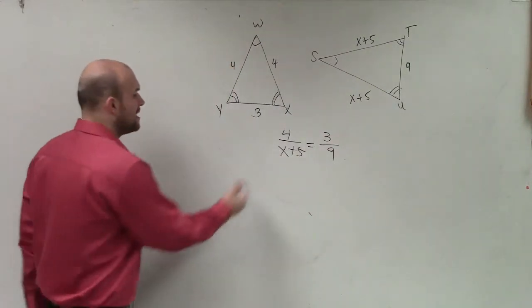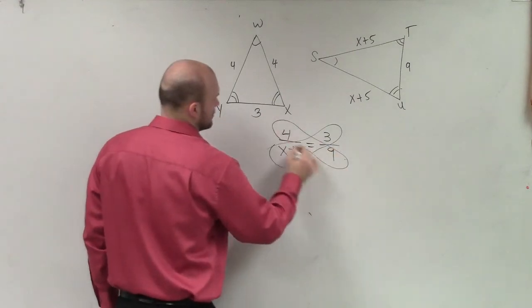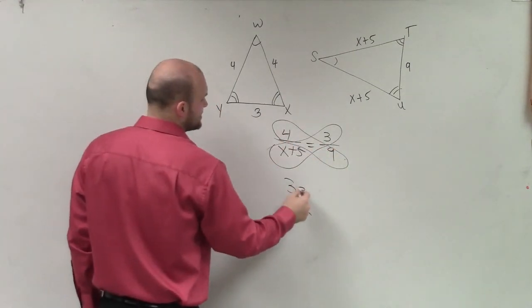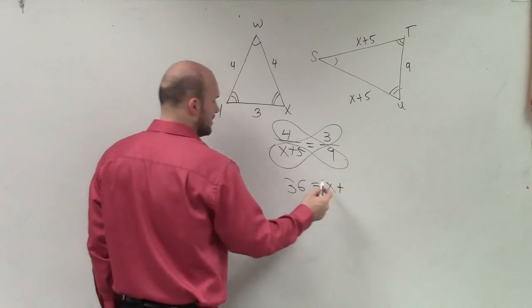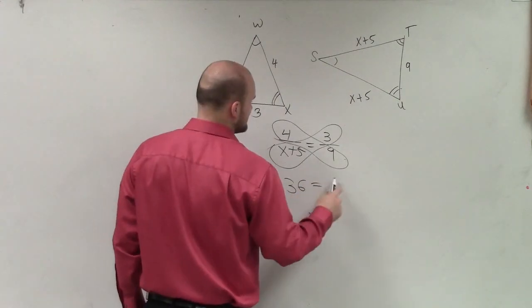Now, I can apply my cross product. 4 times 9 is 36 equals 3 times (x plus 5).